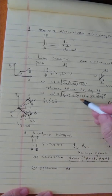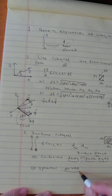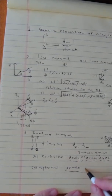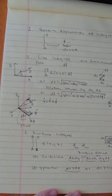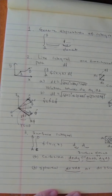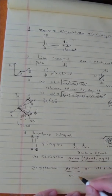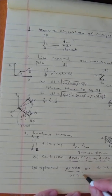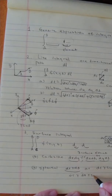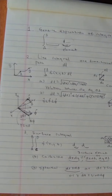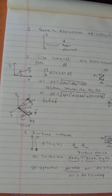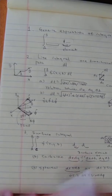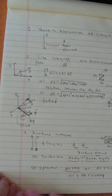Now let's look at spherical coordinates. The spherical coordinate surface elements are simpler too. The elements are: dr·r·dθ, or r·dθ·r·sin θ·dφ, or dr·r·sin θ·dφ. These are all three possible cases.